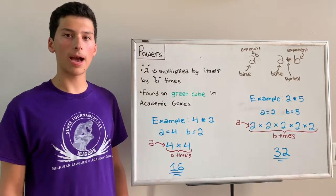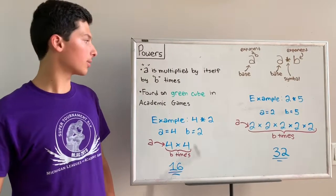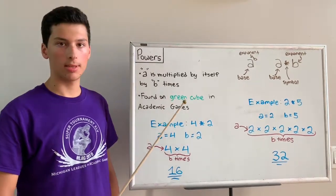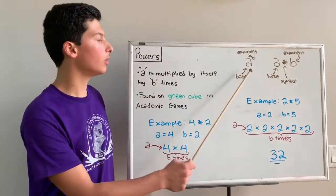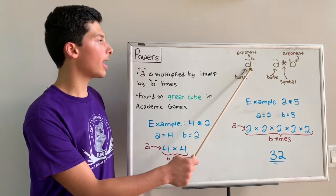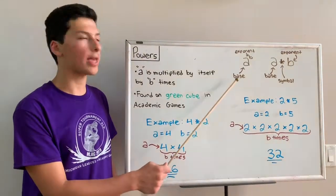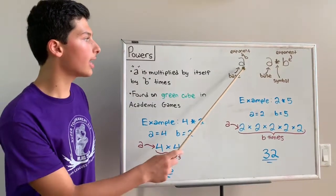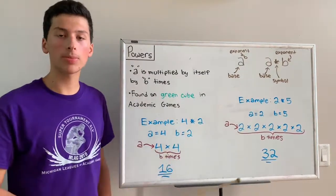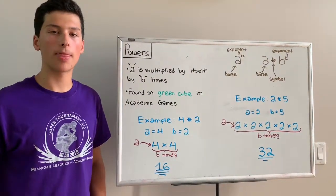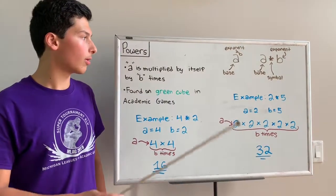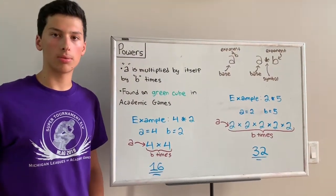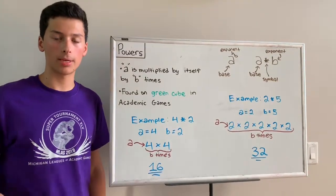We'll start off with powers. In powers, a is multiplied by itself b times. Looking at the notation form, a is what we call in math the base and b is the exponent. What you do is take a and multiply a by itself by the value of b. If a was 2 and b was 3, we would take 2 and multiply it by itself 3 times.